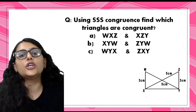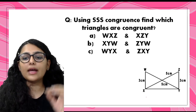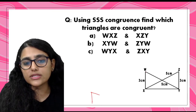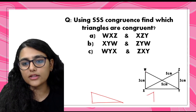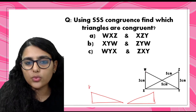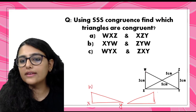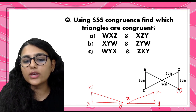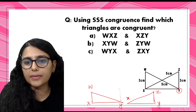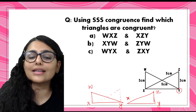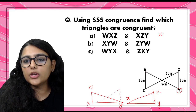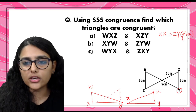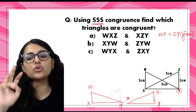Using SSS congruence, let's find which triangles are congruent. We have two triangles: WXY and ZYX, joined together with Y as a common point. First, WX equals ZY - given in the question, both are 3 cm, so one side is equal. Next, XY equals XY because it is a common side to both triangles. Third, WY equals ZX - also given in the question.